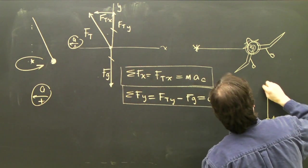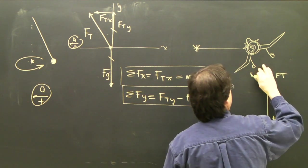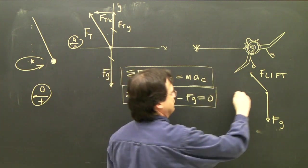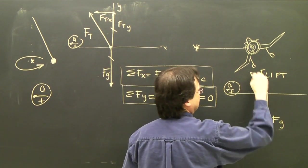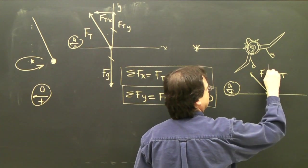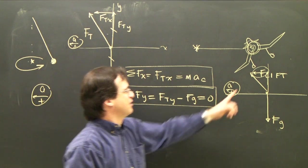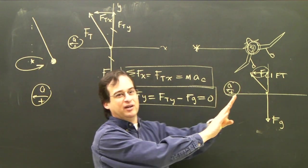That lift, when the airplane tips, is now in this direction. The airplane's accelerating in that direction. That's positive. I have an x component to the lift. This component of the lift is what's pulling the plane this way, making it turn.